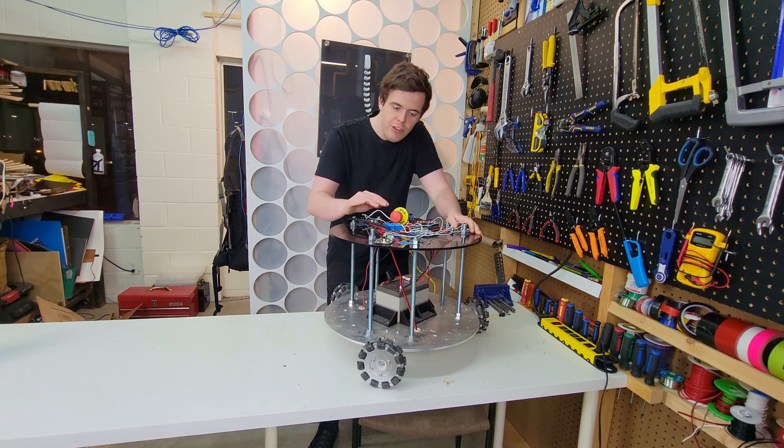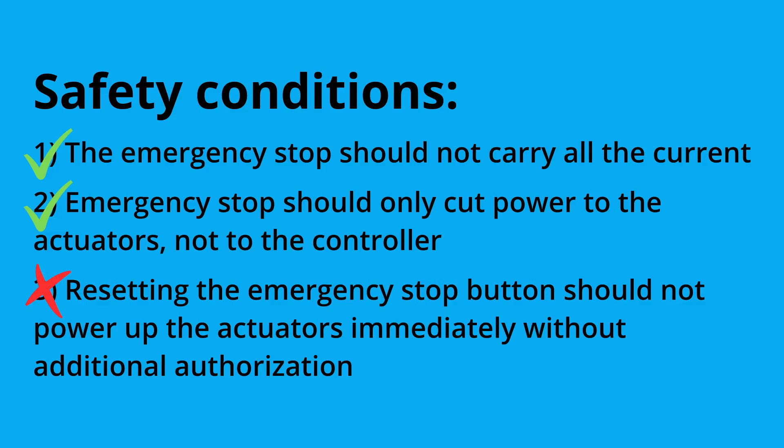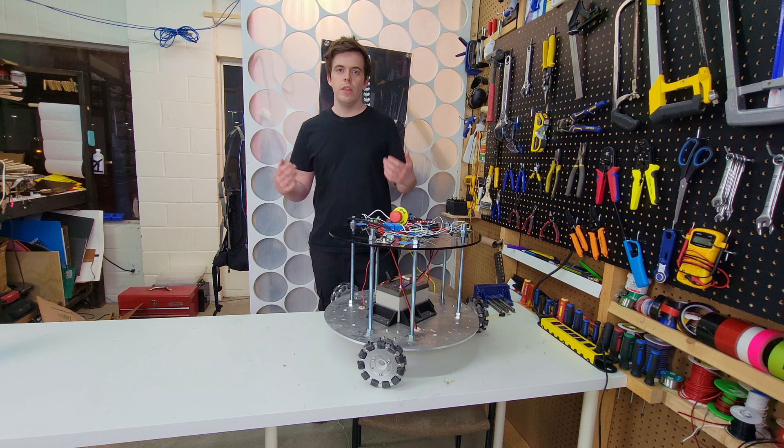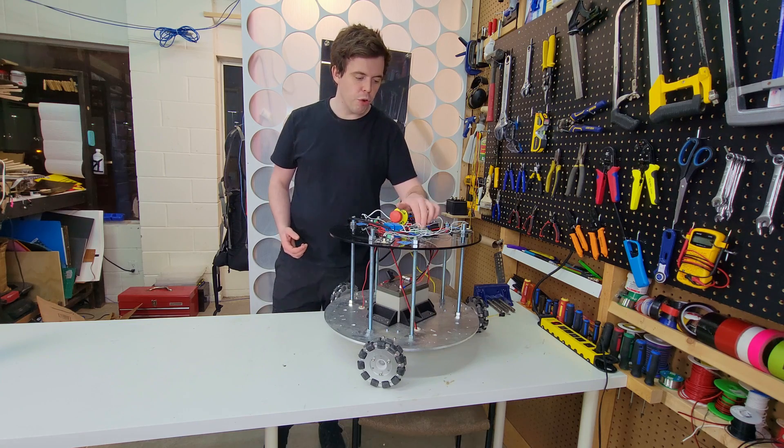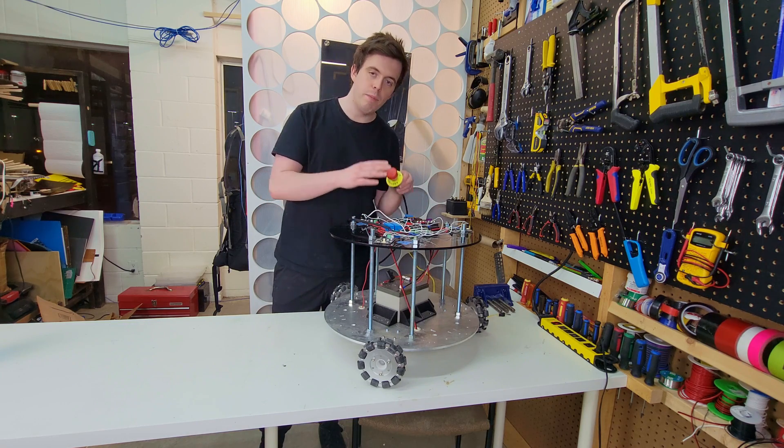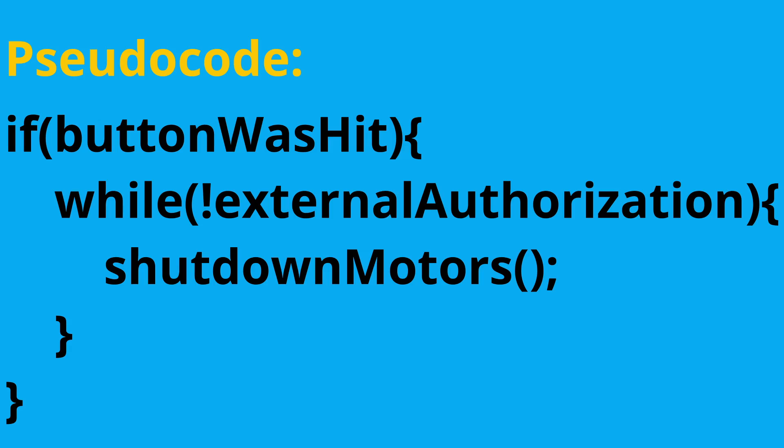Alright, so with this we've met the first and second of our safety requirements. But the final requirement states that resetting the emergency stop button should not power up the actuators immediately without additional authorization. This means we need some way for the controller to know when the emergency stop button has been hit. If it was hit, update the motors to stop, and don't start them back up until external authorization has been given by the operator.